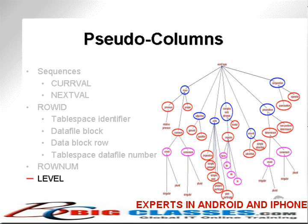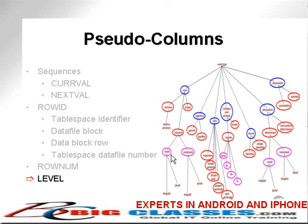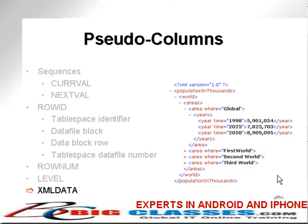The LEVEL pseudo column is used within hierarchical queries to represent and access levels. I've done a diagram to show how the level would represent the level within a hierarchical tree structure — a syntactical lexicon of the English language word types. The blue circles represent level 1, the red circles level 2, and the cyan circles level 3. The XMLDATA pseudo column allows access to XML types which contain XML documents.